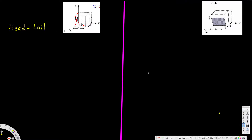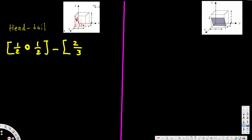Let's look at the head. For the x-axis it's 1/2, and for the y-axis it's 0 because this is in the xz plane — there's no y-axis component. The z-axis is also 1/2. Minus the tail: 2/3 in x and 2/3 in y. Since the tail is at the origin in z, z is 0.